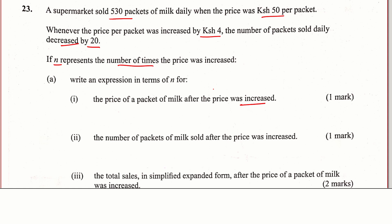To get the price of a packet of milk after the price was increased, we go to the original price. One packet was initially 50 shillings. It was then increased by 4 shillings, and we don't know the number of times it was increased. Since n represents the number of times the price was increased by 4 shillings, the total increase is 4 times n, which is 4n. So the new price after the increase is given by 50 + 4n.